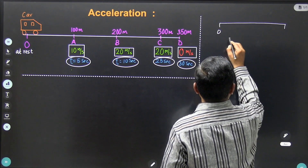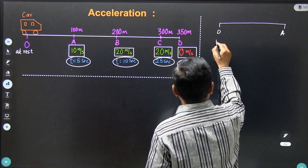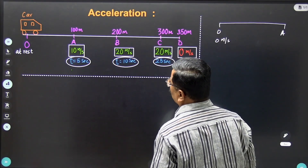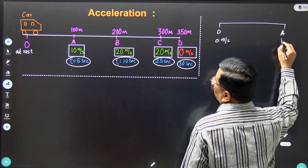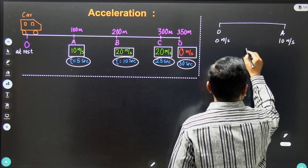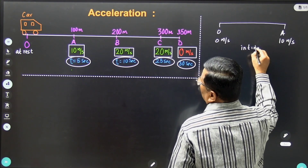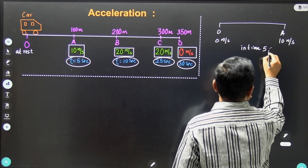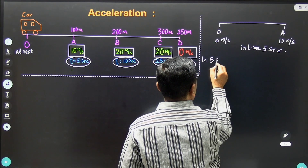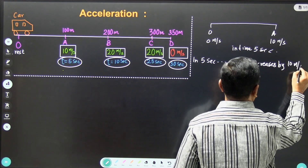Now let us take this example. This is point O and this is point A. At point O the car is at rest, therefore the velocity is 0 meters per second. And at point A it is 10 meters per second. In 5 seconds the velocity increases by 10 meters per second.